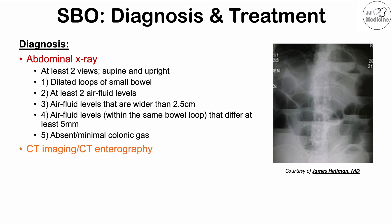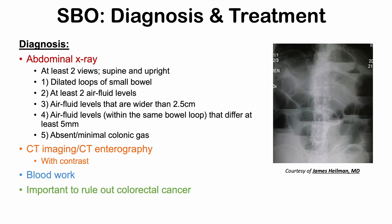CT imaging or CT enterography with contrast can also be used. If the contrast reaches all the way to the rectum, this indicates an incomplete or partial small bowel obstruction; if it does not, that is a complete obstruction. Blood work is also important to assess hydration and signs of tissue damage from possible strangulation — for example, checking LDH levels. Ruling out colorectal cancer is also important, as cancer can be a significant cause of bowel obstruction.